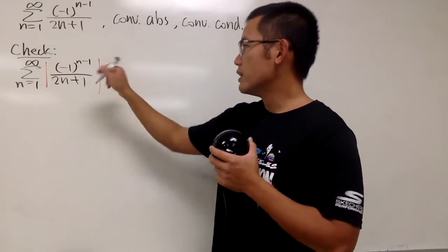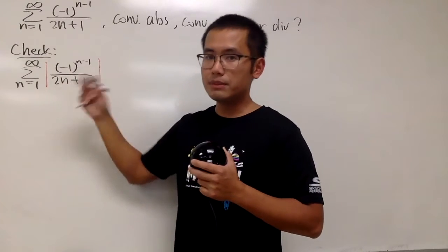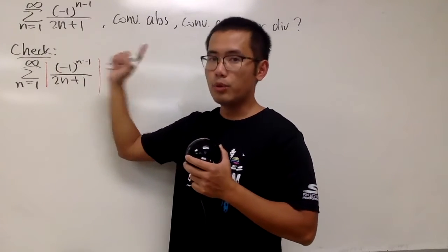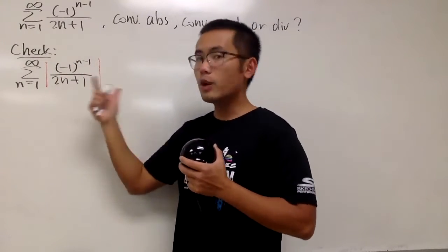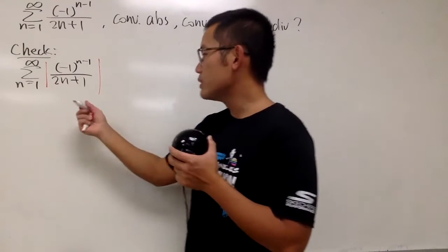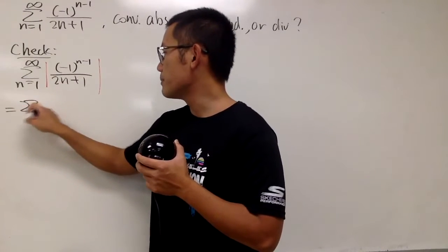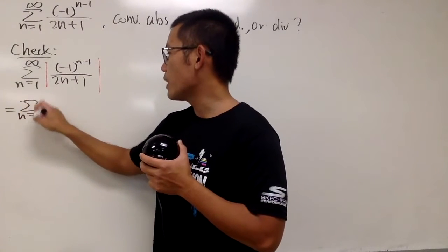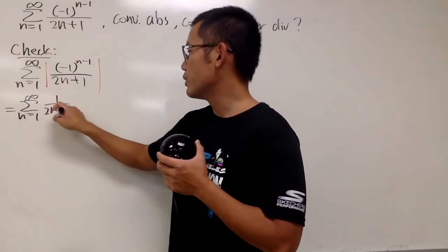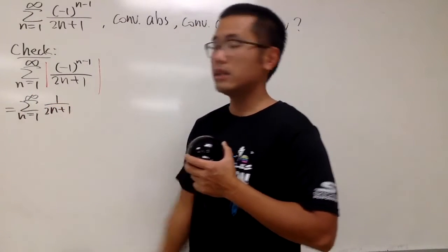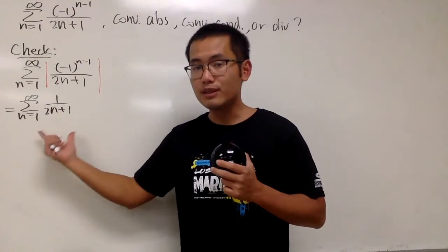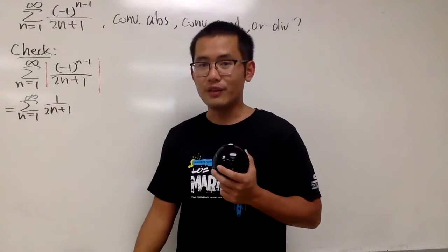The absolute value makes negative numbers positive, so the (-1)^(n-1) part just becomes 1, and the bottom is always positive already. So this is the same as the sum as n goes from 1 to infinity of 1 over (2n+1). Does this converge or diverge?